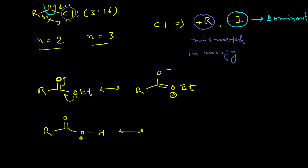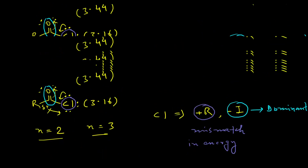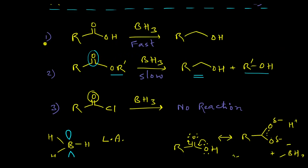In carboxylic acids, when the lone pair forms a double bond, the carbon–oxygen double bond breaks. However, during this process the hydrogen atom shifts onto the oxygen, and the new structure shows no charge separation. Because there is no charge separation, the sp2-hybridized oxygen atom of carboxylic acids is more nucleophilic than the sp2-hybridized oxygen atom of ester molecules. That is why carboxylic acids react faster with borane, while esters react comparatively slower.